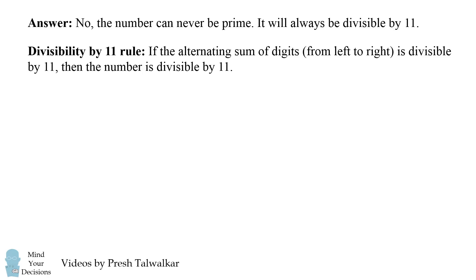So here's the solution. The number can never be prime. It will always be divisible by 11. To explain why this is true, let's review the divisibility by 11 rule. This states that if the alternating sum of digits from left to right is divisible by 11, then the number is divisible by 11.